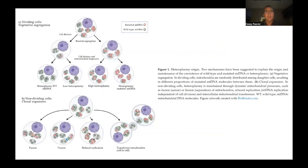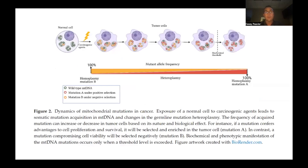Whether it's a dividing cell or a non-dividing cell, mutated DNA and wild-type or normal DNA are segregated amongst daughter or progenitor cells through various mechanisms. The bottom-left segment illustrates what we call mitochondrial dynamics — which includes mitochondrial biogenesis, fusion, fission, and mitophagy — and we'll have an entire series on that. There's also lateral transfer of mitochondria, where the body can send healthy mitochondria to damaged tissues to help improve the bioenergetics of that particular cell.